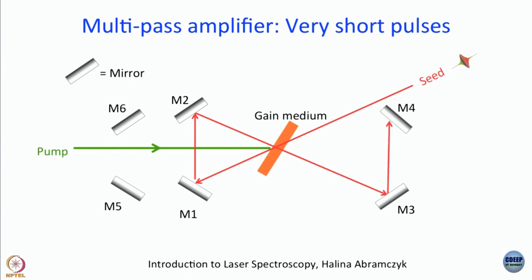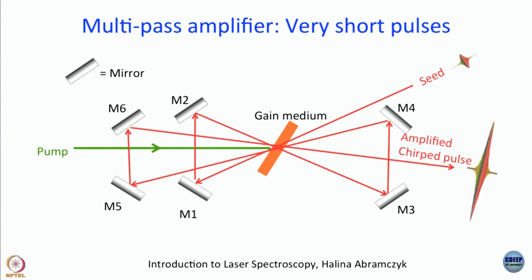M3 sends the beam to M4, and from M4 it goes through the gain medium to M5 — the third pass. From M5 it goes to M6, and from M6 it makes the fourth pass through the gain medium and exits as the amplified chirped pulse. The good thing about a multipass amplifier is that the only medium the beam travels through is the gain medium — everything else is reflective — and that is why it gives very short pulses.